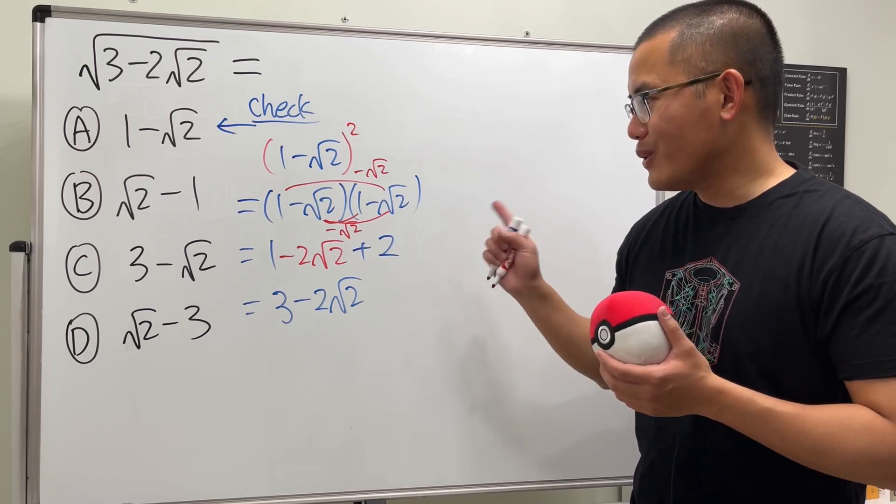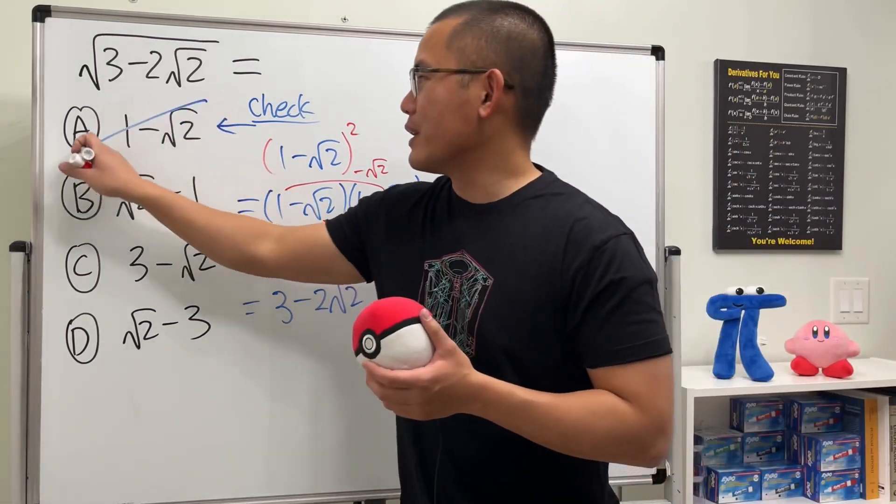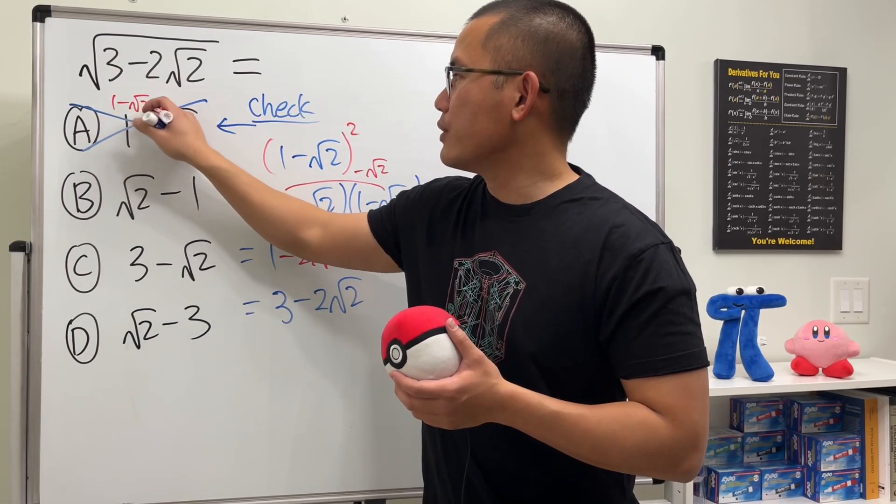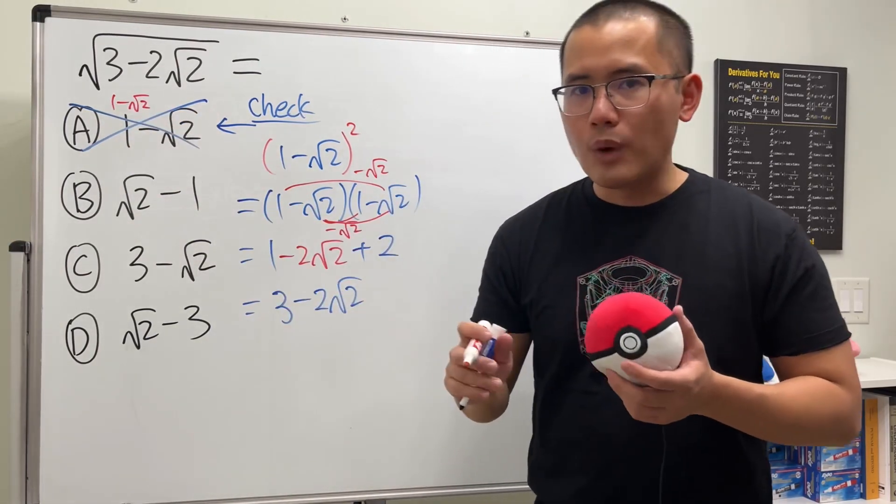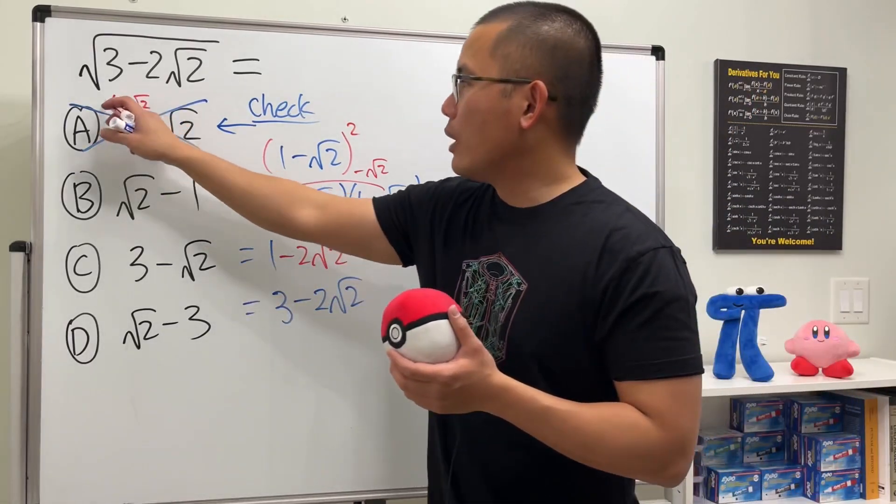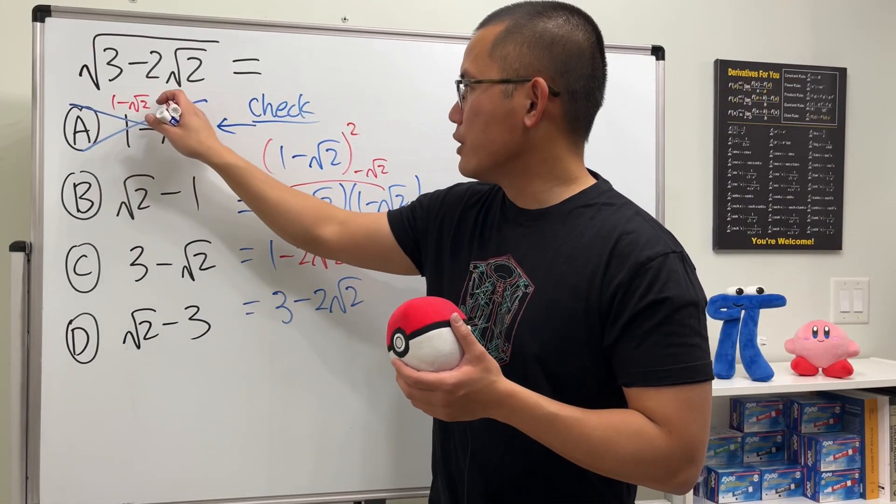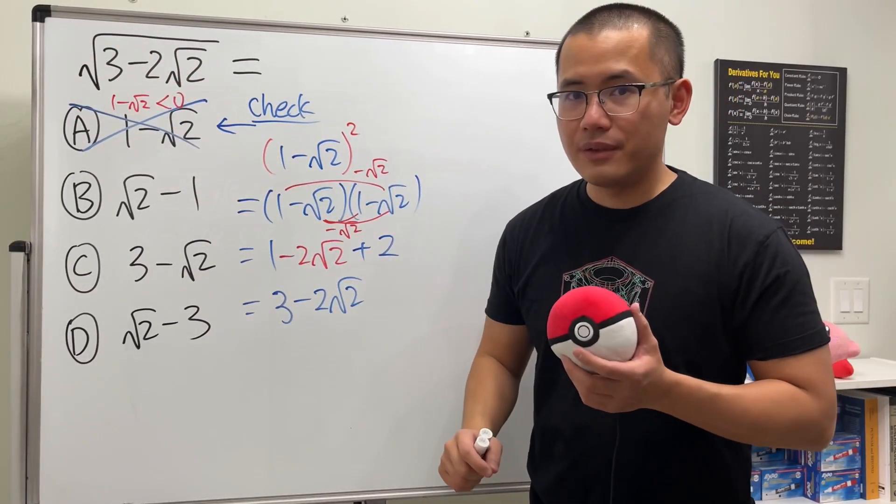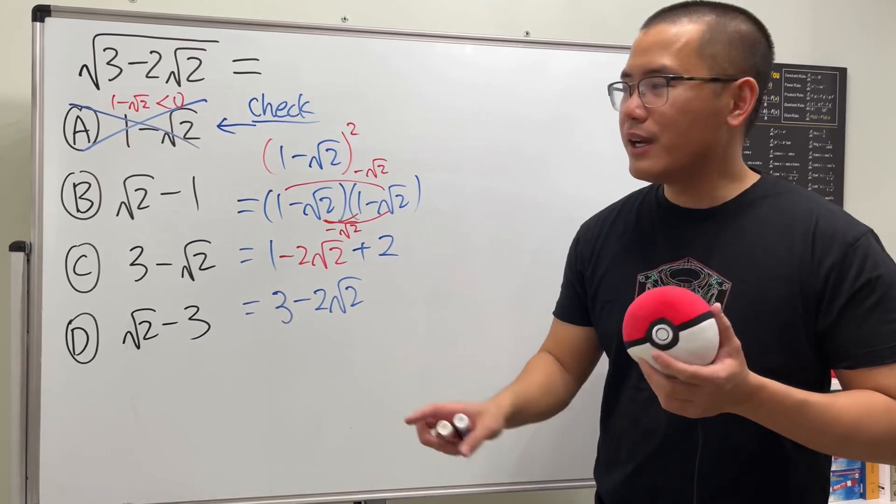No, no, no! In fact, this is not correct, and the reason is because this right here is negative. When we have 1-√2, √2 is about 1.414. 1 minus 1.414, this is negative. The output of the square root cannot be negative.